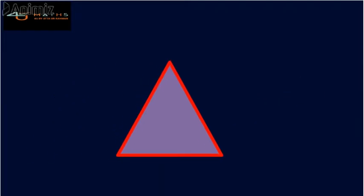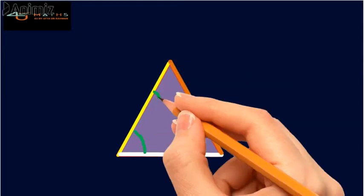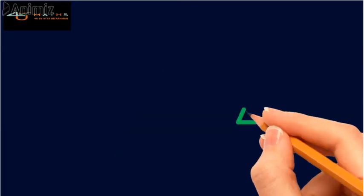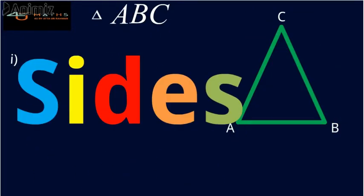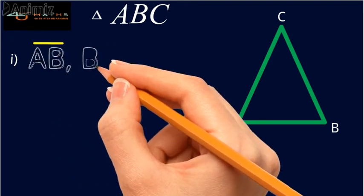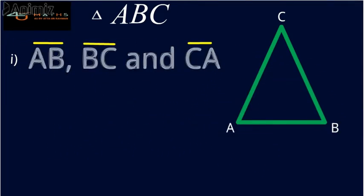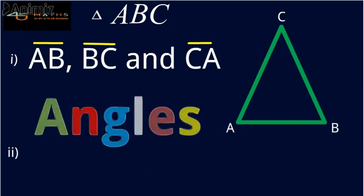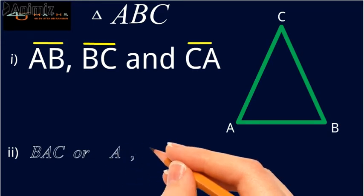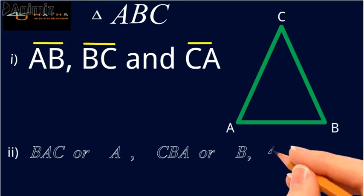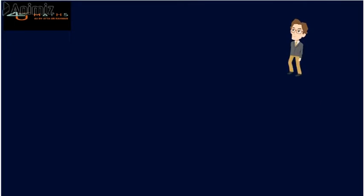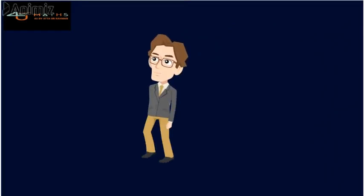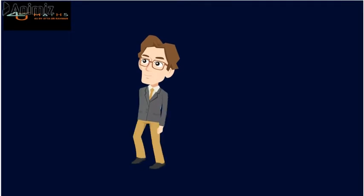As we know, a triangle has six elements — three sides and three angles. For example, if we have triangle ABC, then its six parts are: sides AB, BC, and CA; and angles BAC or angle A, angle CBA or angle B, and angle ACB or angle C. As a prerequisite, let me define the following definition first.